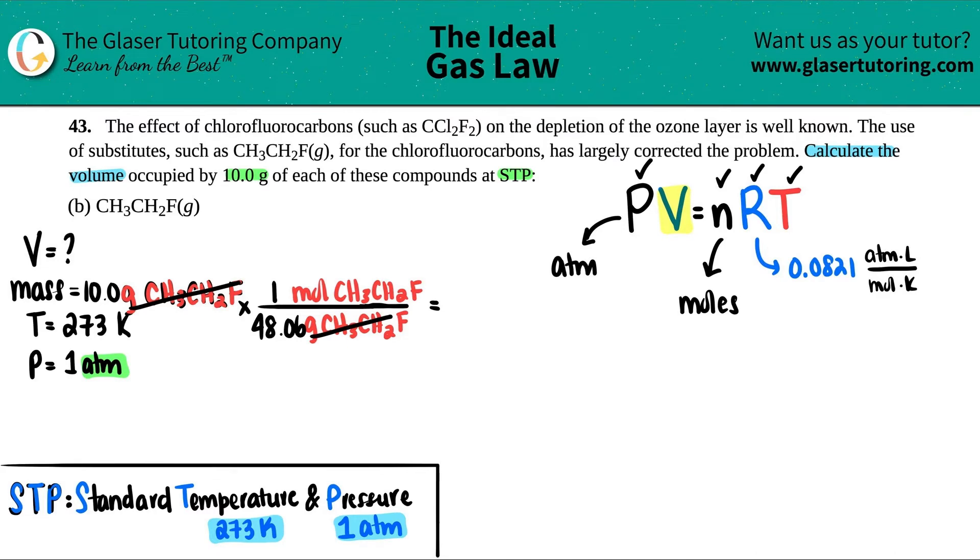10 divided by that number is a long decimal value. So I'm just going to put it down here. I'm going to try not to round because this isn't the final answer. So remember, you should always just try to round at the final answer. 0.208073, I think that's good enough. And now we have moles of CH3CH2F.